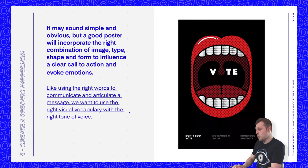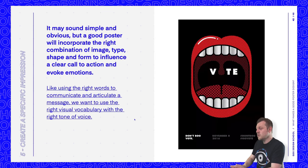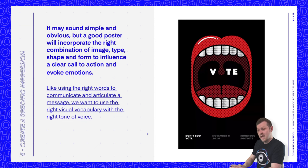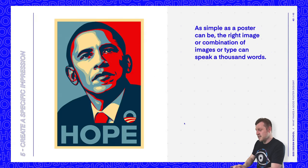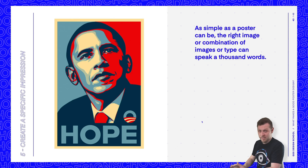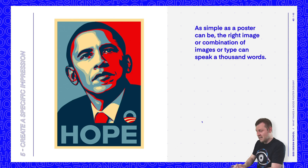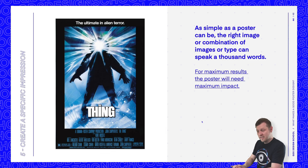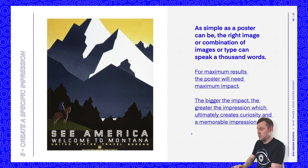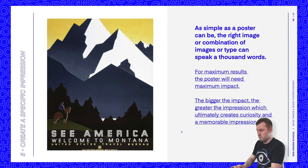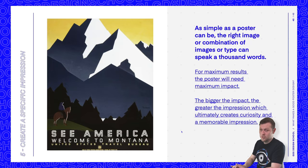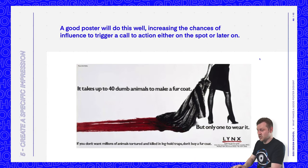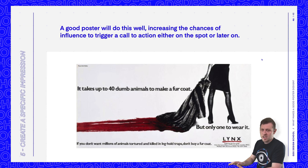Like using the right words to communicate and articulate a message, we want to use the right visual vocabulary with the right tone of voice. As simple as a poster can be, the right image or combination of image and type can speak a thousand words. For maximum results, the poster will need maximum impact. The bigger the impact, the greater the impression, which ultimately creates curiosity and a memorable impression — increasing the chances of triggering a call to action, either on the spot or later on.